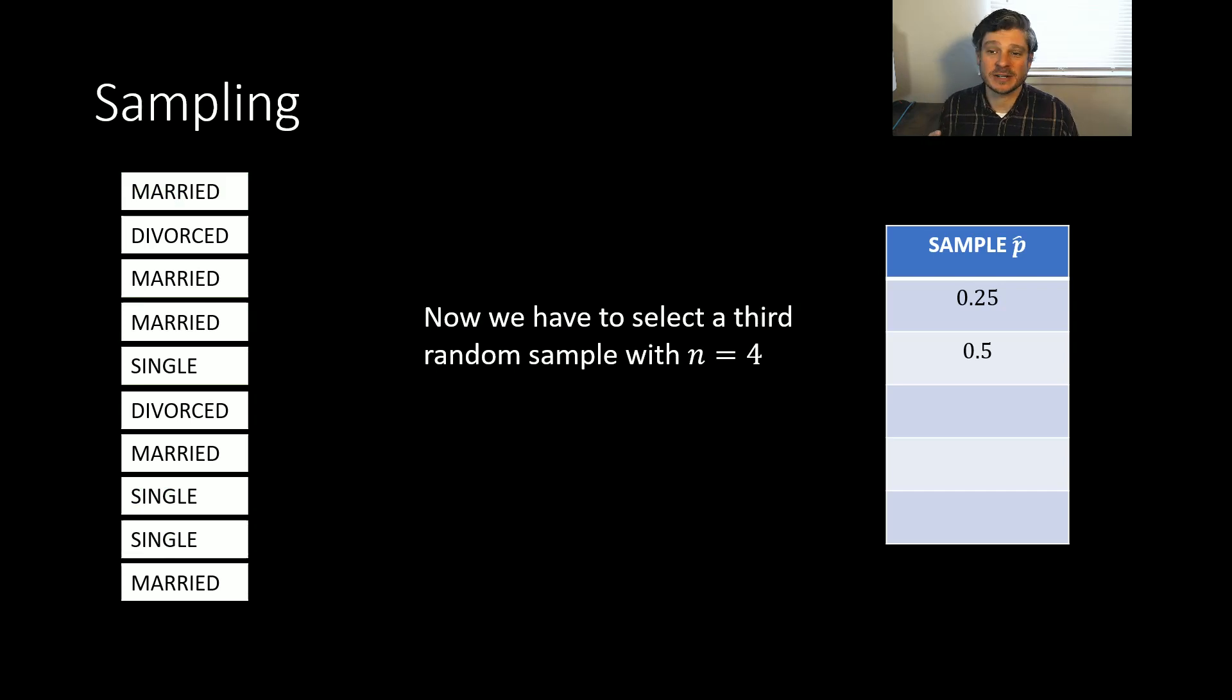And now I need a third random sample with N equals four. So we're going to pick four more random choices. So divorced, married, married, single. So again, I get two out of four, even though it's a different sample altogether. We record that as 0.5. And then we're going to continue this process two more times. So let's say we got 0.75. So the next sample had three out of four that were married. And then my last sample, there was two out of five. So again, we get that 0.5.